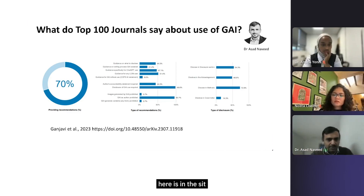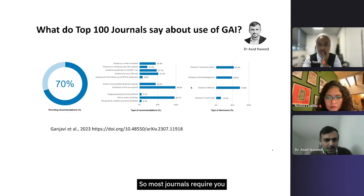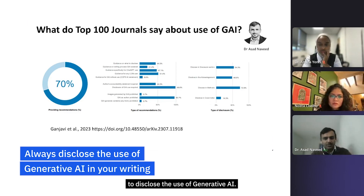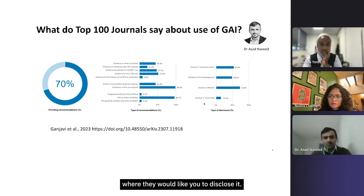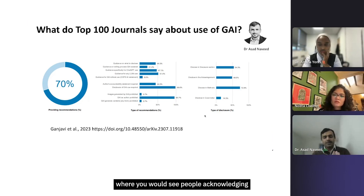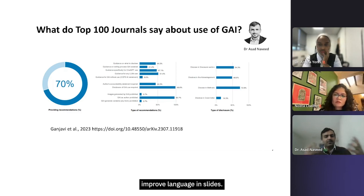The other thing to know is in the middle area there — disclosure of generative AI use is required. So most journals require you to disclose the use of generative AI, and on the right-hand side they tell you exactly where they would like you to disclose it. This is something that will become more popular over time, where you would see people acknowledging the use of generative AI and mentioning that they used it to improve language and clarity.